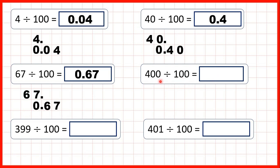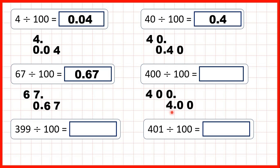Now we have 400 divided by 100. You might already know the answer is 4, but let's use the same method to show that it works. We write out the number with the decimal point on the end, copy down the decimal point, and move each digit one, two squares across. That gives us 4.00. But remember, when you have a decimal point and then zeros on the end of a number, you have a whole number — so 4.00 is the same as 4.